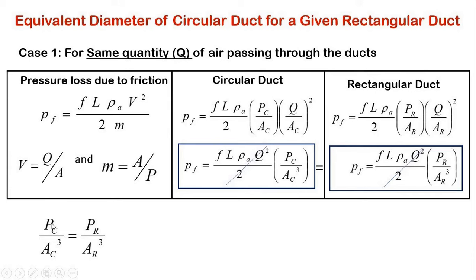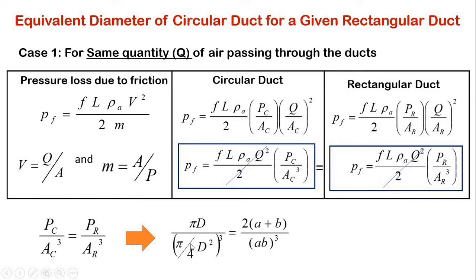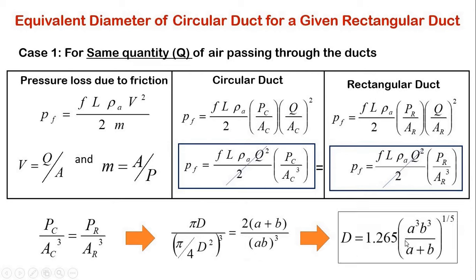We can now substitute the formulas for wetted perimeter and cross-sectional area. For circular duct, the wetted perimeter is pi·D and cross-sectional area is (pi/4)·D squared. For rectangular duct, the wetted perimeter is 2·(A + B) and cross-sectional area is A·B. Simplifying and solving for D gives the formula: D equals 1.265 multiplied by (A cubed · B cubed divided by (A + B)) raised to the power of one-fifth. This equation gives the equivalent diameter of circular duct for a given rectangular duct.